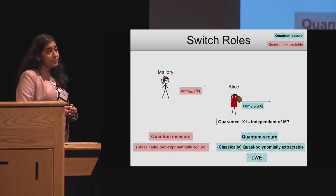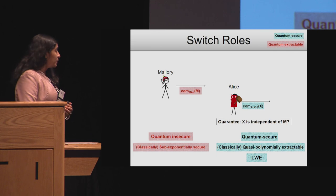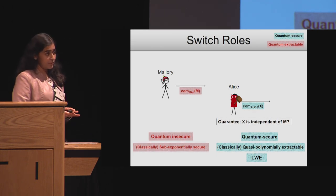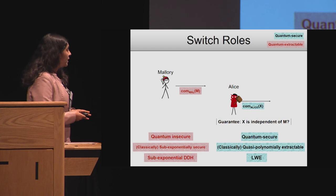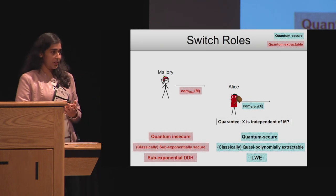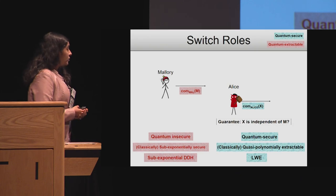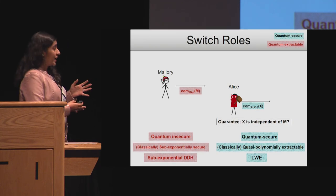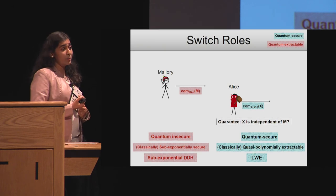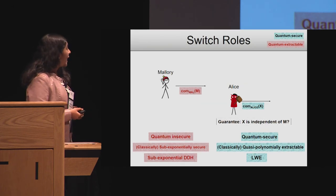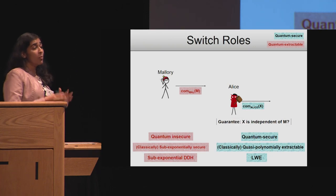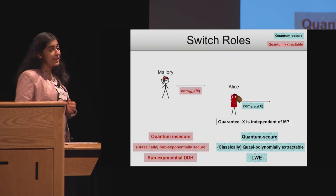At the same time, Mallory's commitment will be set so that it's sub-exponentially secure against classical adversaries. This can be done by building a non-interactive commitment based on sub-exponential DDH. So Alice's commitment satisfies both properties: quantum polynomially secure and yet classically quasi-polynomially insecure. And Mallory's commitment is quantum insecure but classically more secure than Alice's commitment.